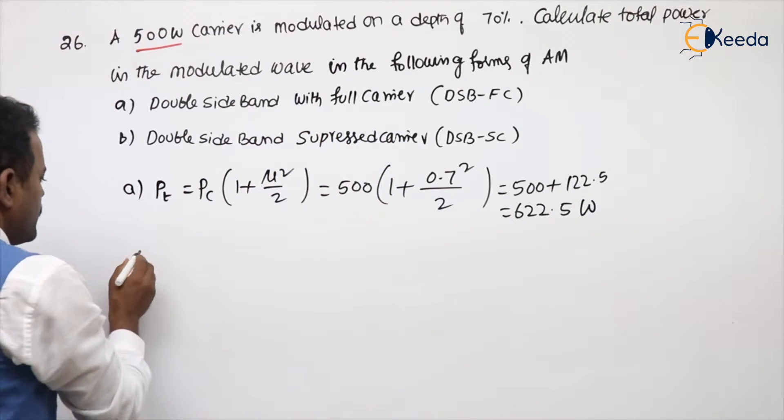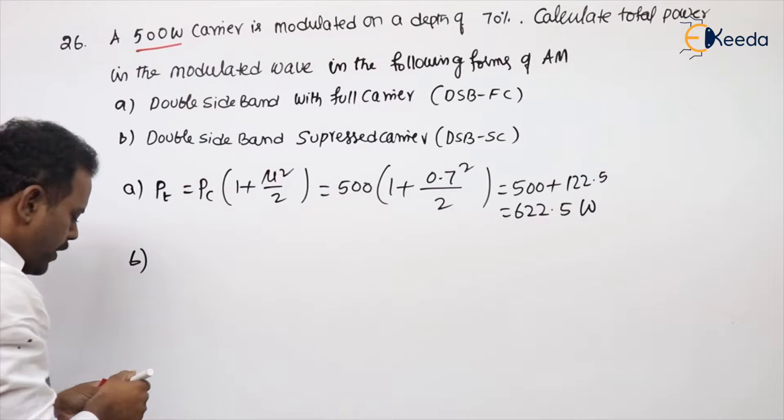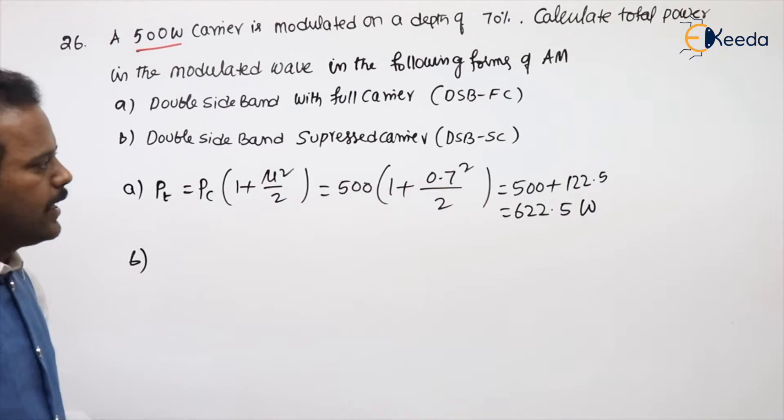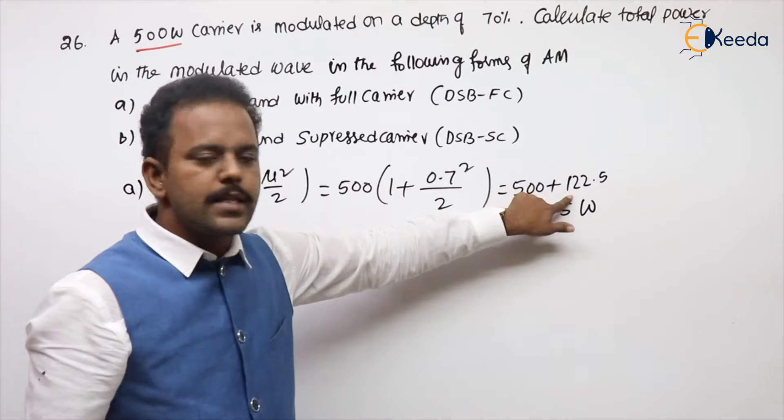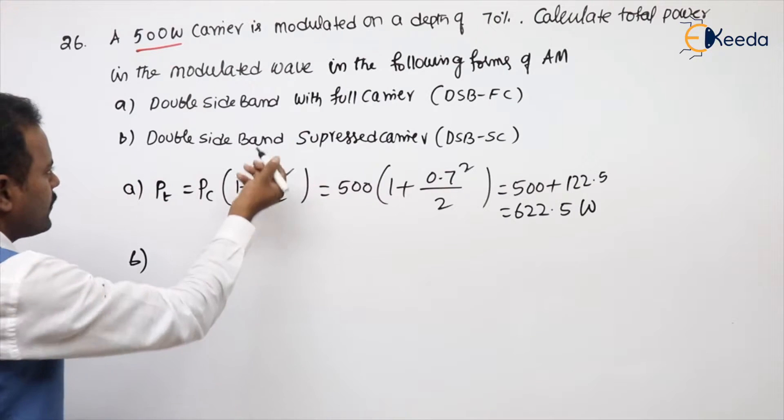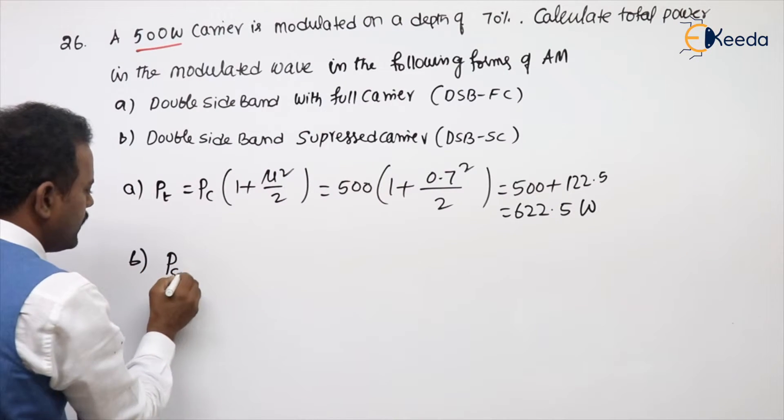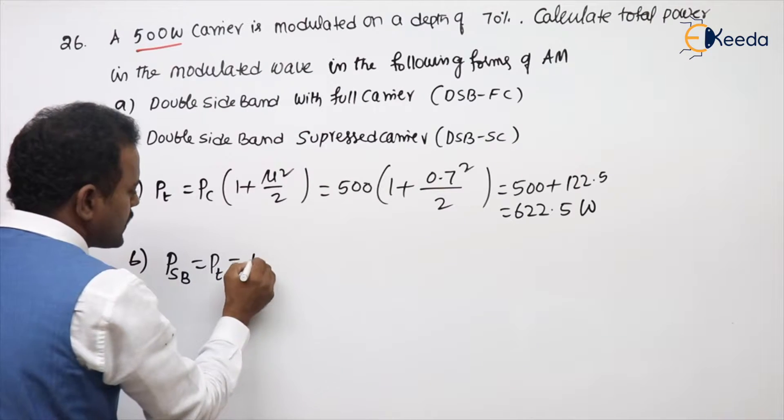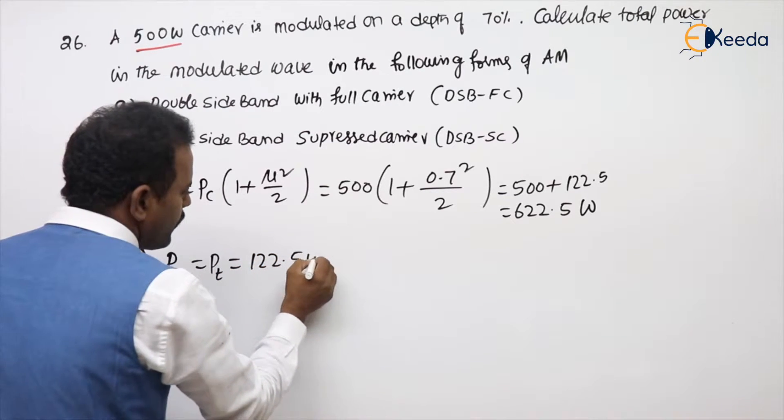Now, what is the second problem? This problem we can do in many ways. If you see clearly, carrier plus sideband power. So directly I can say the power of DSBFC is nothing but sideband power, and total power in DSBFC is saved. So 122.5 watts.